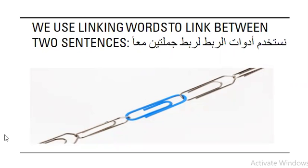كتير باللغة الإنجليزية في أدوات ربط. Some linking words are used to add information — بعض أدوات الربط تُستخدم لإضافة معلومات. Some are used to show sequencing or sequencing of events — عشان يعملوا ترتيب للأحداث. Some linking words are used to show reason and result — لهم السبب والنتيجة — we discussed these in module 2 when we talked about 'because' and 'so that'. Some are used to show contrasting ideas, and many other purposes.